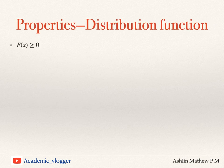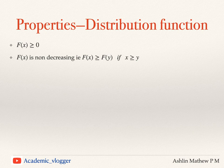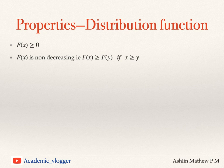Coming to the properties of the distribution function: F(x) is denoted by capital F(x) and can be written as the cumulative sum of the probabilities. Since the PMF values are probabilities and are greater than or equal to 0, capital F(x) also takes values greater than or equal to 0. Also, F(x) is a non-decreasing function — that is, if x ≥ y, then F(x) must be greater than or equal to F(y). It cannot be a decreasing value.